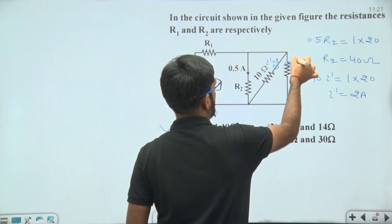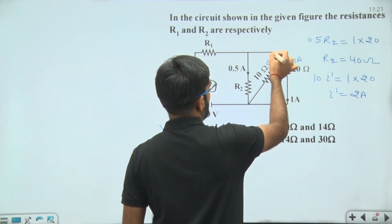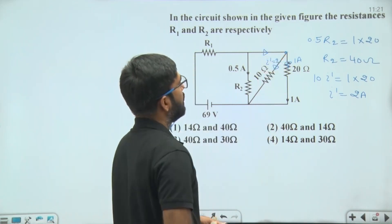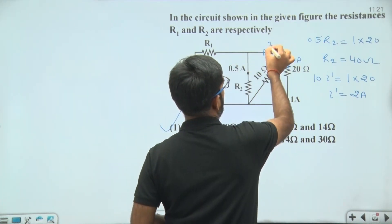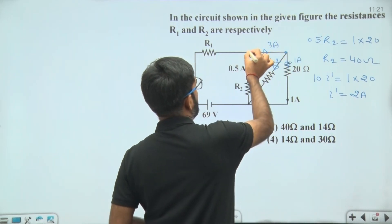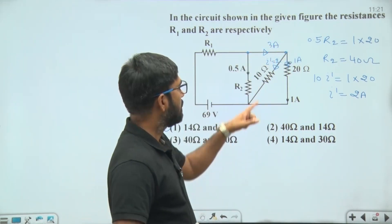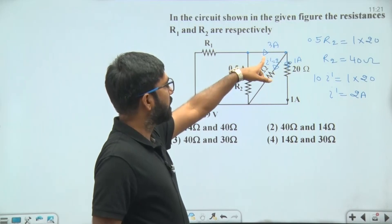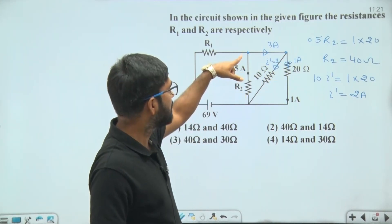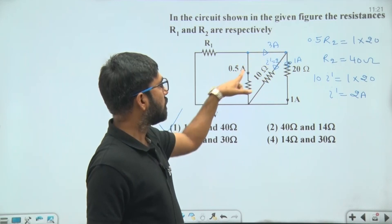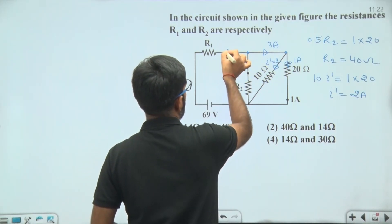Using KCL at this junction, the current coming out is 2 + 1 = 3 ampere. Again at the next junction, using Kirchhoff's Current Law, the outgoing current is 3 ampere on one branch and 0.5 ampere on another branch, giving a total outgoing current of 3.5 ampere.